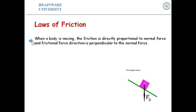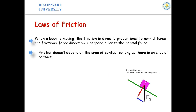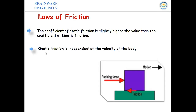Laws of friction recap: first, when a body is moving, friction is directly proportional to the normal force and acts perpendicular to the normal force. Second, friction does not depend on the area of contact — the magnitude of the friction force equals the force tending to move the body. Third, the coefficient of static friction is slightly higher than the coefficient of kinetic friction.